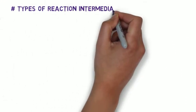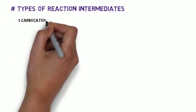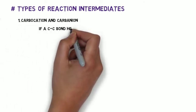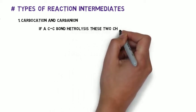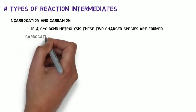The next one we are going to see is types of reaction intermediates. The first one is carbocation and carbanion. If a carbon-carbon bond heterolyses, it means heterolytic fission happens. These two charged species are formed.